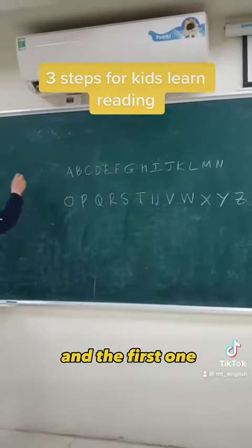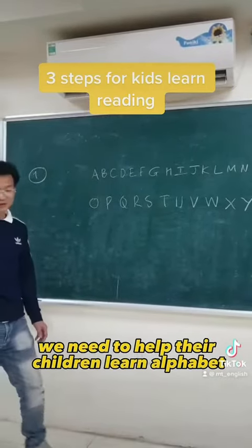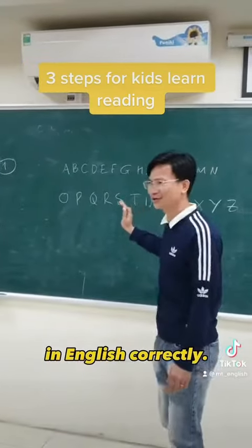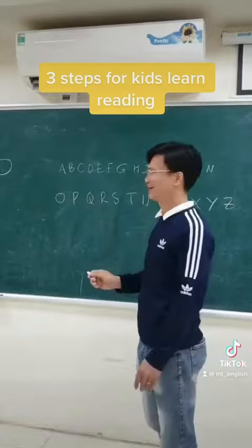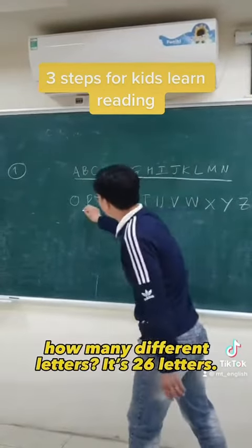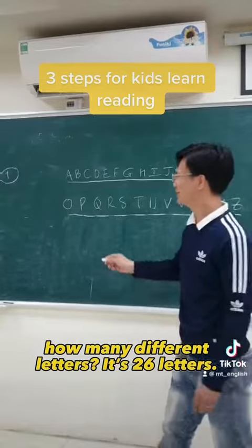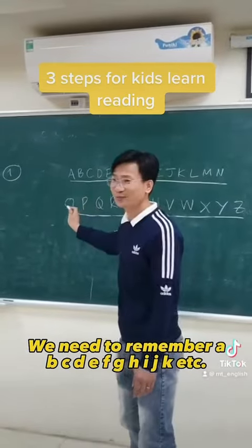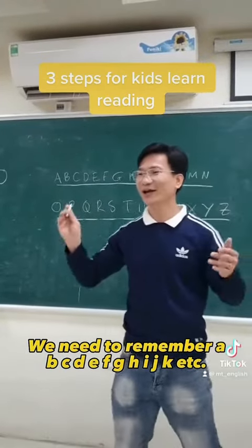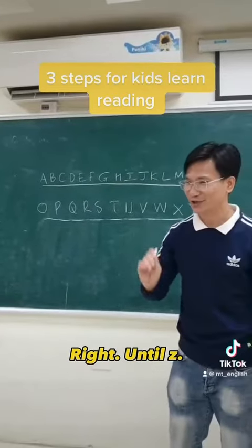The first thing we need to do is help children learn the alphabet in English correctly. How many letters are there in English? 26 letters. We need to remember: A, B, C, D, E, F, G, H, I, J, K, etc.